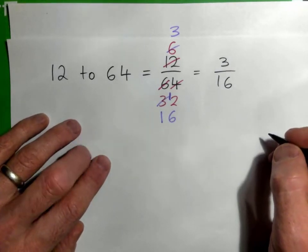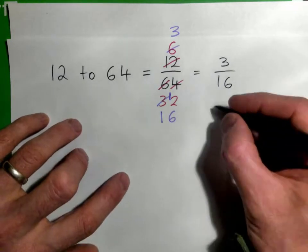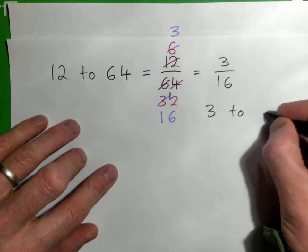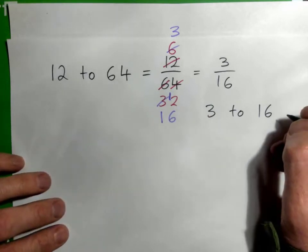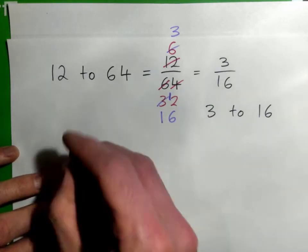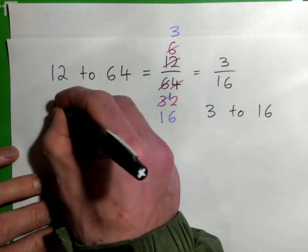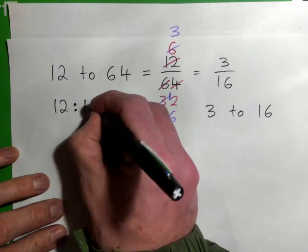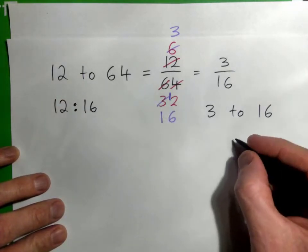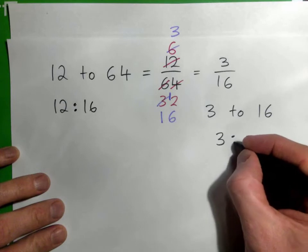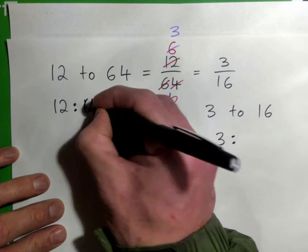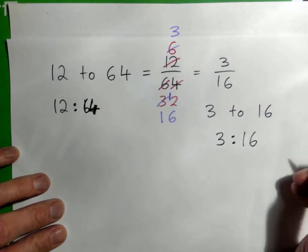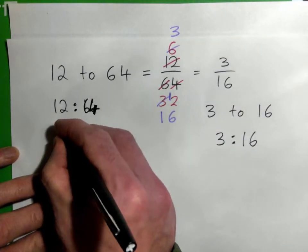And that's as far as you can go. Now that can be written 3 to 16. By the way, ratios can also be written with the colon. 12 to 64 is the same thing as 3 to 16.